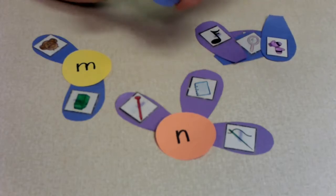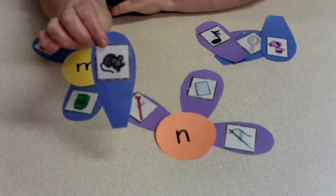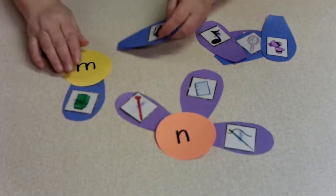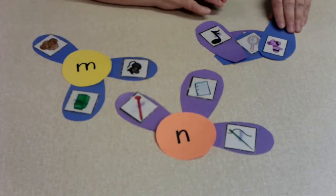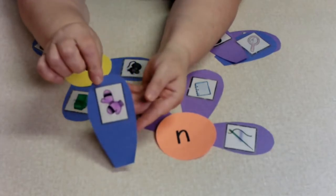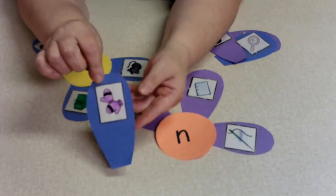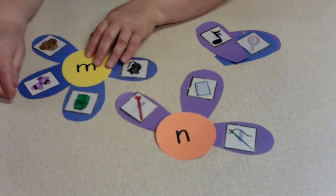Nail begins with the N sound. Here we have a mouse. Mouse begins with that N sound. And we have some mittens. Nail begins with the N sound.